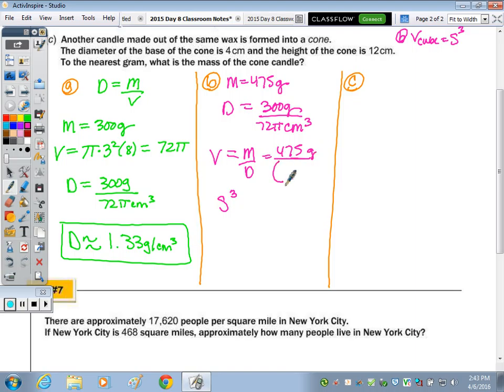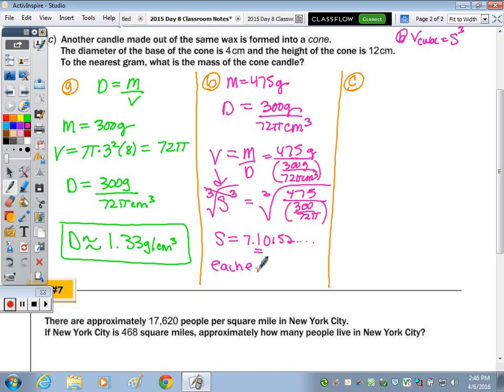So I'm going to replace the V with the S. We're just showing the work. You're going to do all the calculations in your calculator. So S cubed equals this, and to find S, we'll take the cube root. So it's the cube root of 475 divided by 300 over 72 pi. So let's do the math. The exact answer, the cube is going to cancel out or be canceled out by the cube root. So the edge is exactly 7.10152. And then rounding, did it say to the nearest tenth? Part B, yes. Each edge is about 7.1 centimeters.